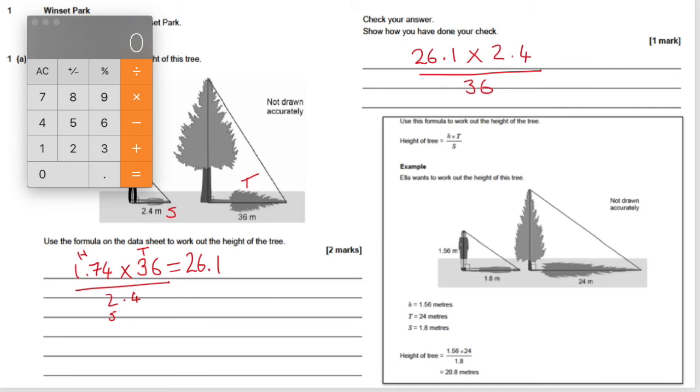And what we should get would be Jeff's height now if we complete this calculation. And that's how we check our answer. So 26.1 which was the answer we got previously. Now we're going to times that by 2.4.